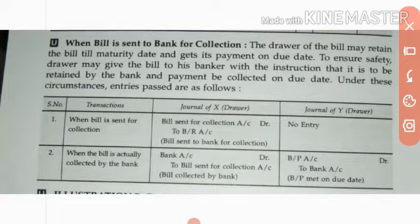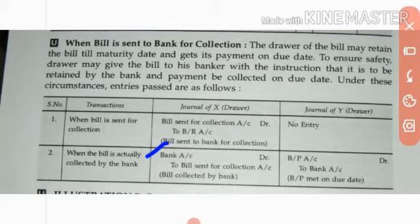Now, in case the bill is actually collected by the bank — when the bill is collected on the due date — in this condition, the money comes to me through the bank, so Bank Account is debited because my bank balance increases. And the source from which I am receiving the money is the Bills Sent for Collection account, since the bill collected by the bank is the one I had sent to the bank.